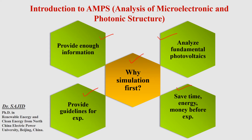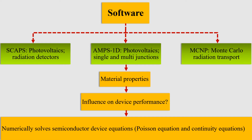Simulation can provide guidelines for experiments — if we have a valid simulation of the device, we can proceed to experiments. There are many softwares for simulation; for example, SCAPS can be used for photovoltaics and radiation detectors, and AMPS can be used for photovoltaics, single junction, multi-junction, PIN, and NIP devices. We also have MCNP, which is used for radiation transport.